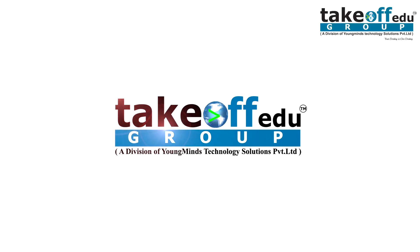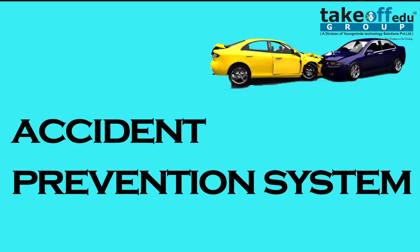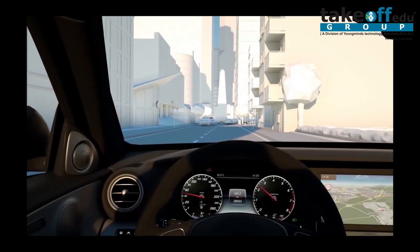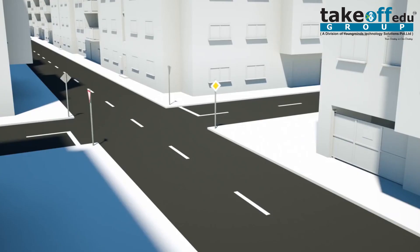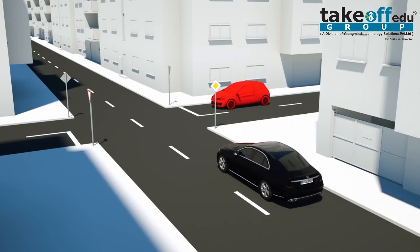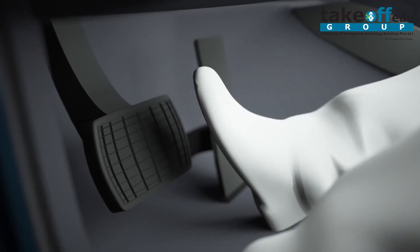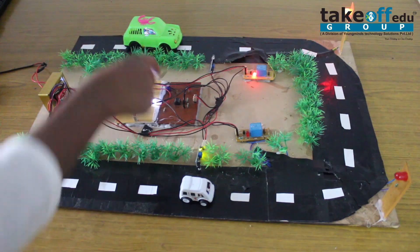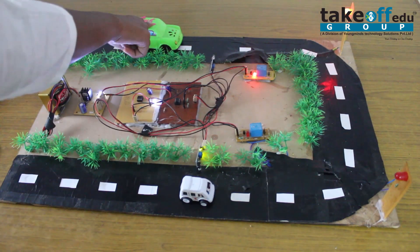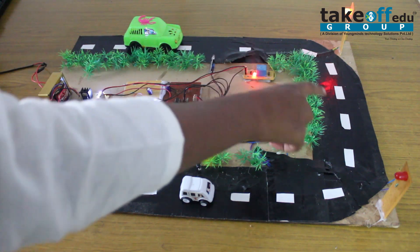Hello guys, welcome to Takeoff Group. Today our project is an accident prevention system. As we all know, there are many accidents occurring near curvy roads because drivers are unable to see vehicles coming from the opposite side of the road. To avoid such accidents, we have created this project to indicate the driver if any other vehicle is coming from the opposite side of the road.